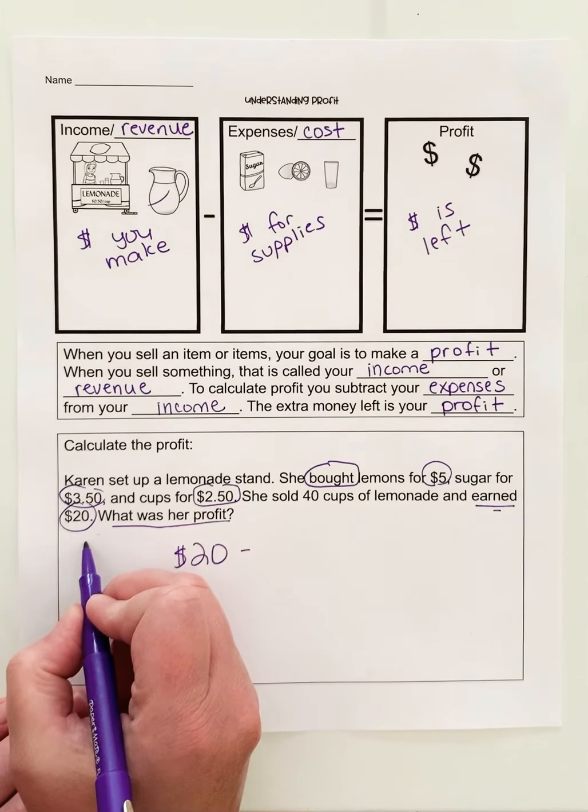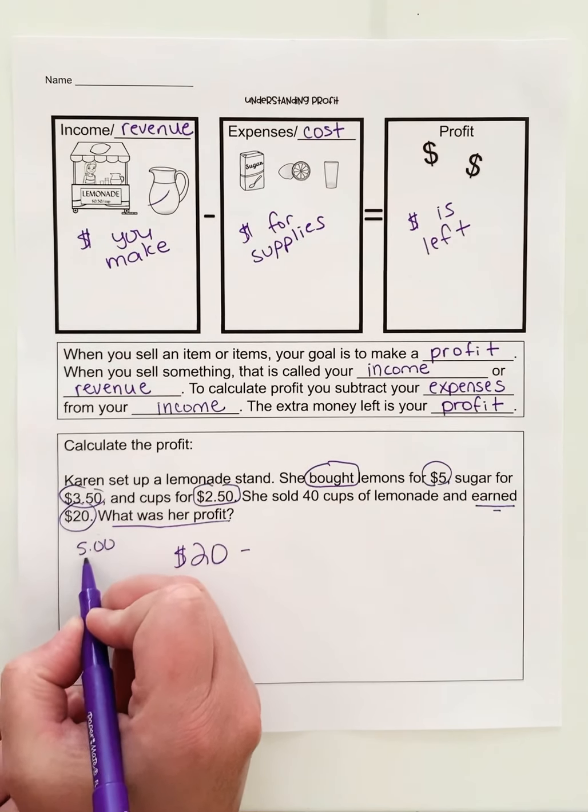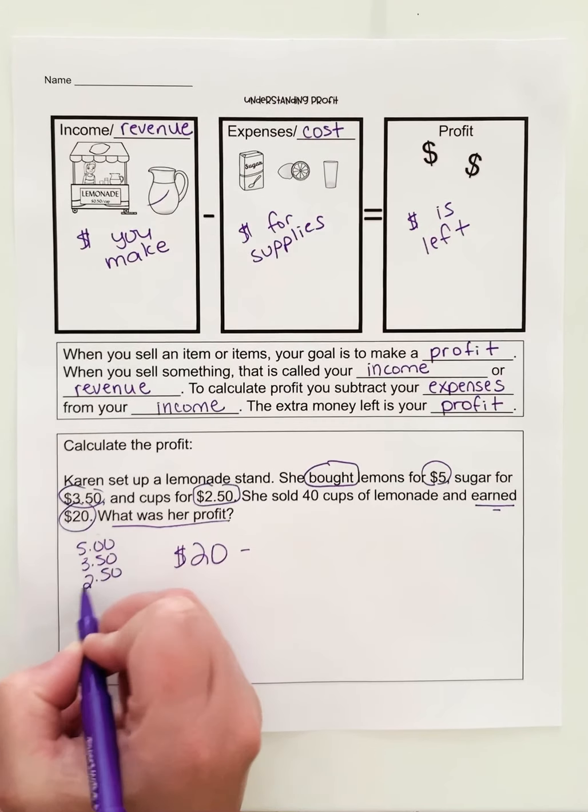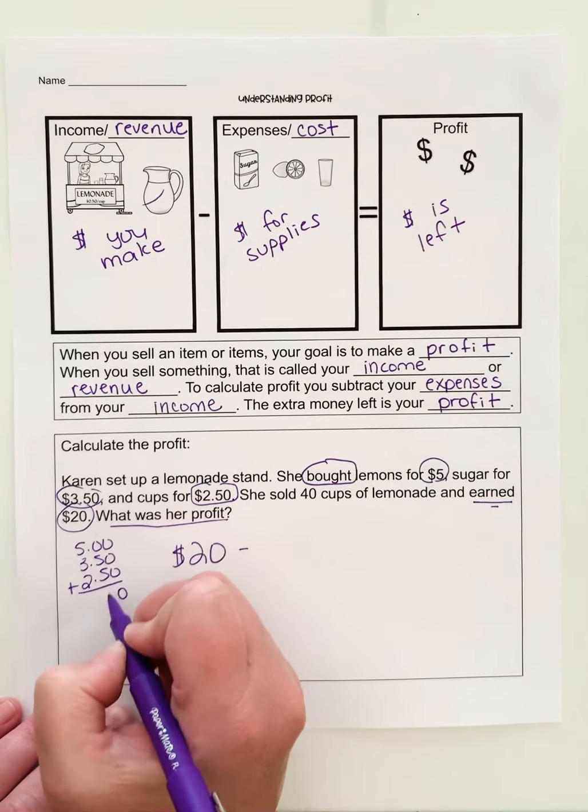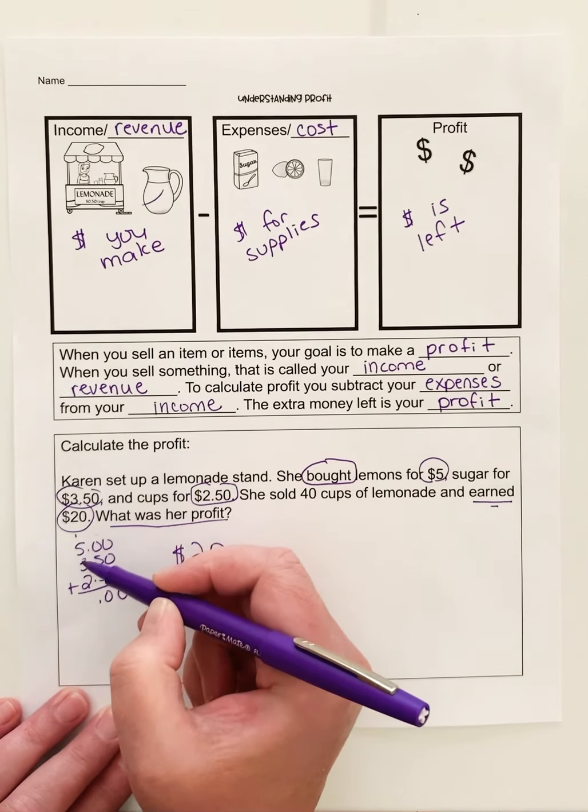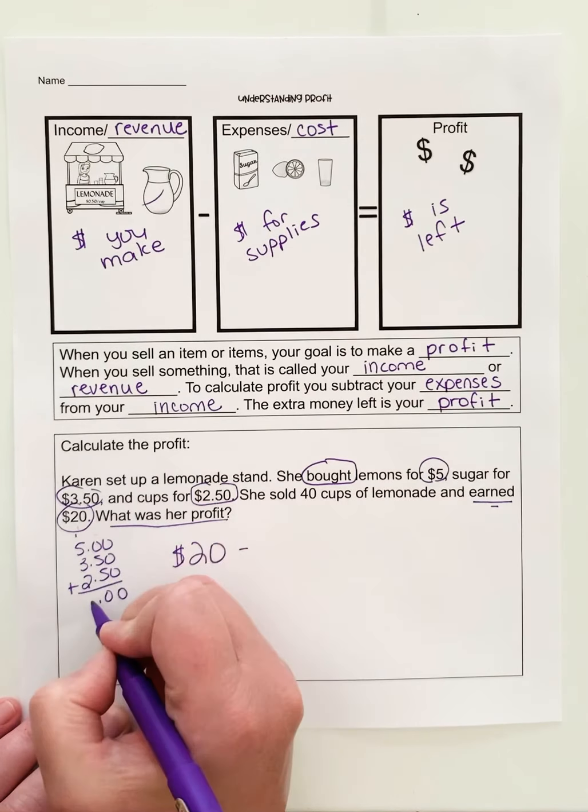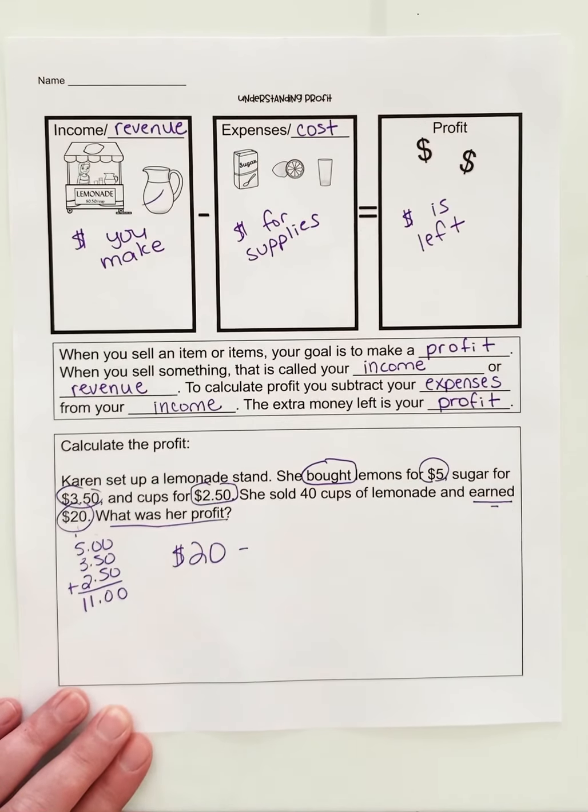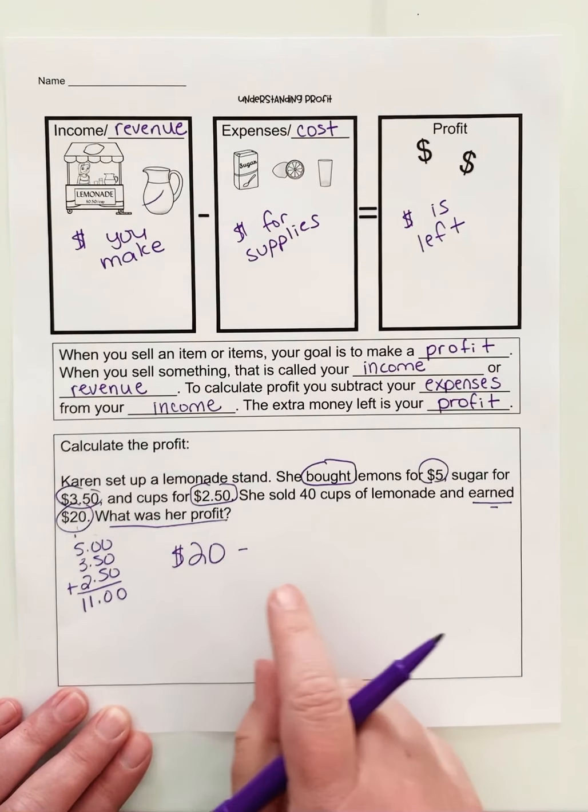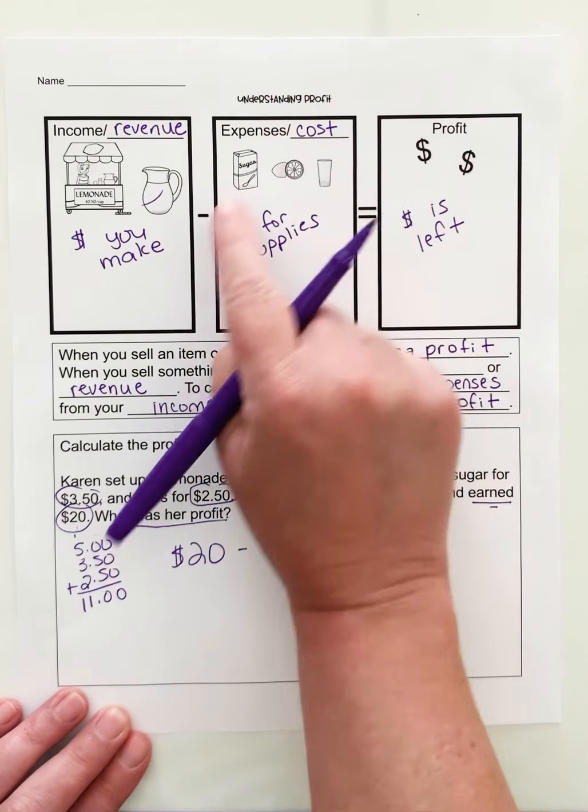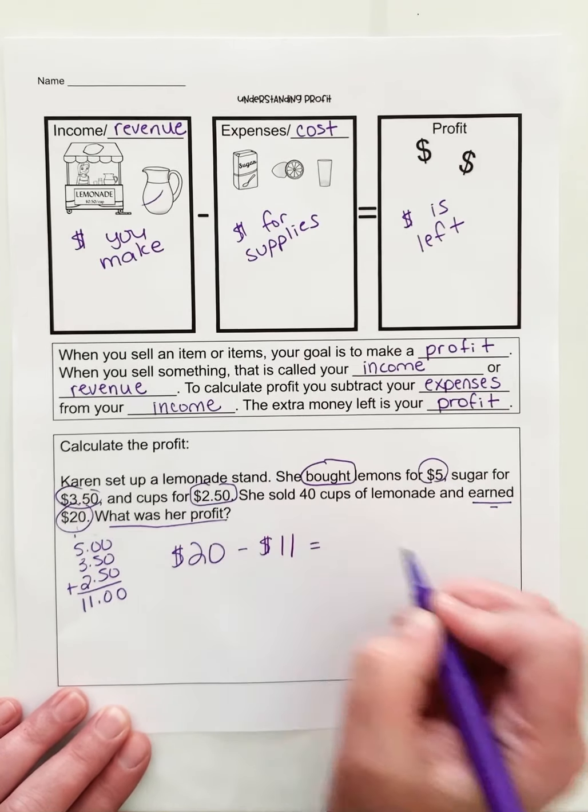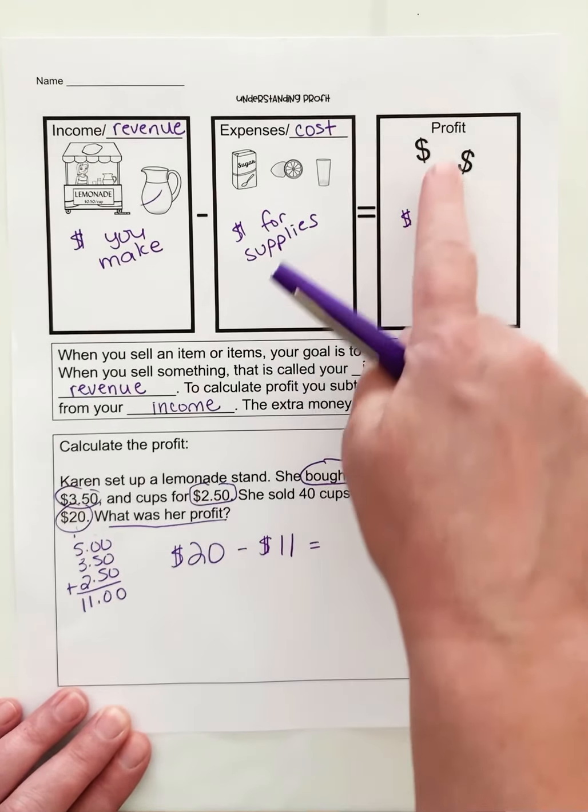I'm going to come over here to the side, and I'm going to add up her total expenses and see what the total amount is. So when I add that up, drop down that decimal, $5, $8, $9, $10, $11. $11 is the amount she spent on her supplies. So to calculate her profit, I have to subtract those expenses. And what is left is her profit.